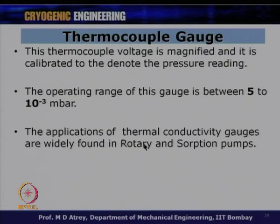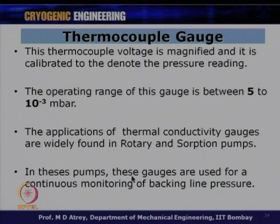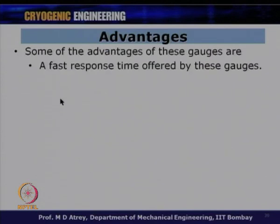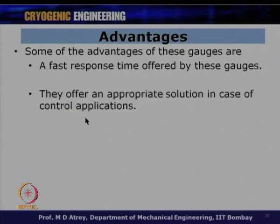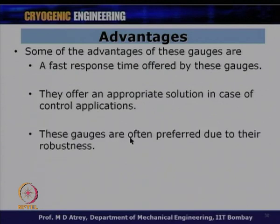The operating range of both the Pirani gauge and thermocouple gauge is between 5 to 10⁻³ millibar. These gauges are widely used in rotary and diffusion pumps for continuous monitoring of backing line pressure. Advantages include fast response time, suitability for control applications, robustness, and low cost compared to other gauges.